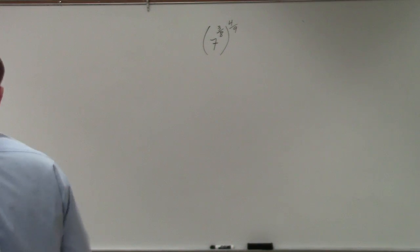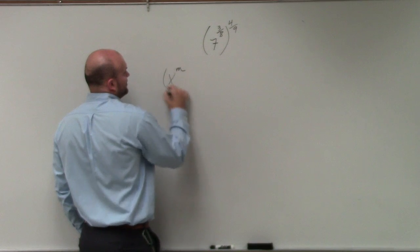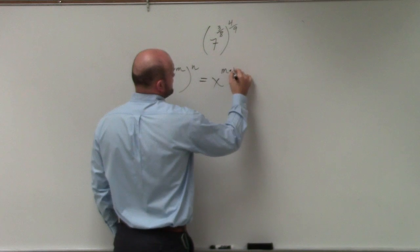We're going to review our rules of exponents. The rule of exponents states that if you have a variable raised to a power raised to another power, that is equal to x to the m times n.